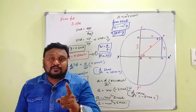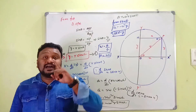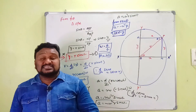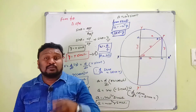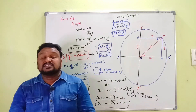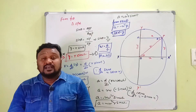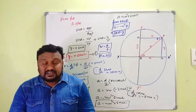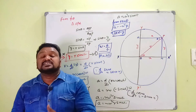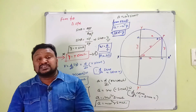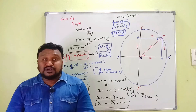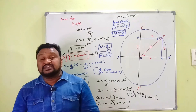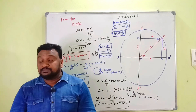So the motion of the particle along the circular path is nothing but the combination of two Simple Harmonic Motions. I hope you understood. If you found this video useful, please like, share, and comment, and share our channel with your friends. Thank you.